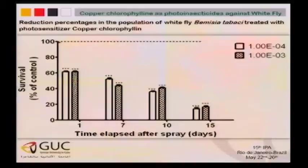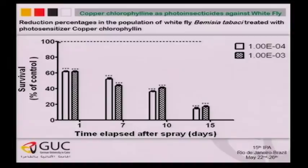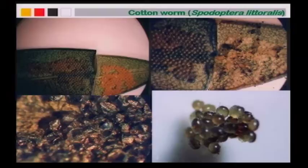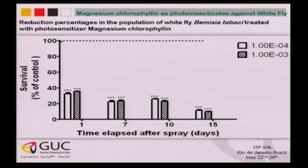The results show about 80% to 85% reduction in population using chlorophyllin — copper chlorophyllin — and if we add this copper chlorophyllin to graphene oxide or silver nanocomposite, the efficiency is further increased. For magnesium chlorophyllin derivatives, the results are more or less the same.